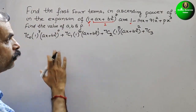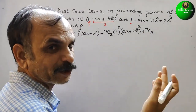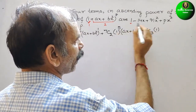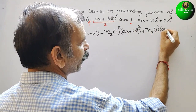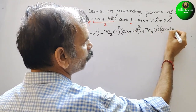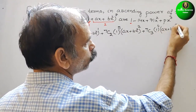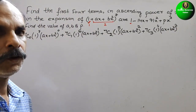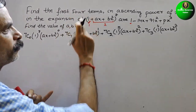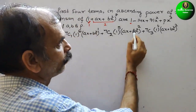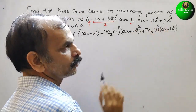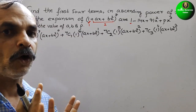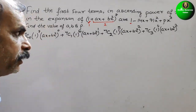Plus 7C3, the fourth term, with 1 to the power 4 and (ax + bx²) to the power 3. They have told 4 terms, so first, second, third, and fourth — that means we have to take it only up to x³.